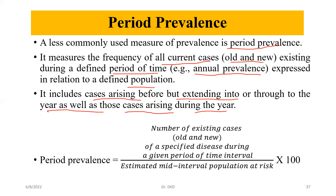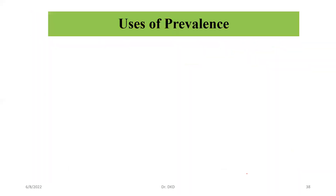Period prevalence can be calculated as: number of existing cases (old and new) of a specified disease during a given period of time interval, divided by the estimated mid-interval population at risk, multiplied by 100.